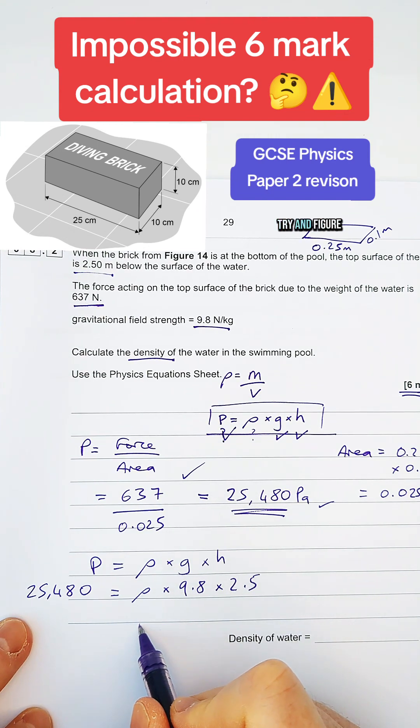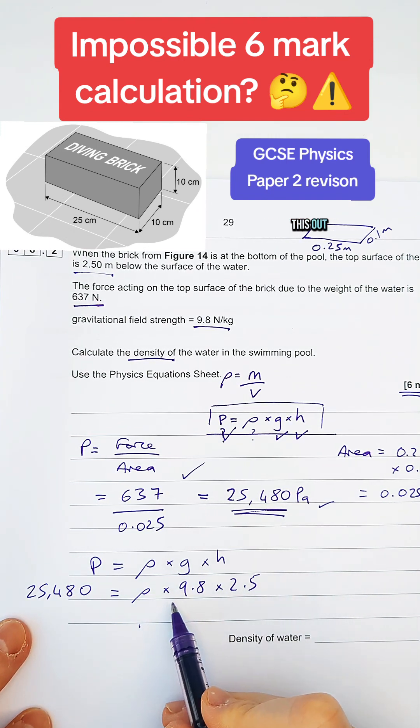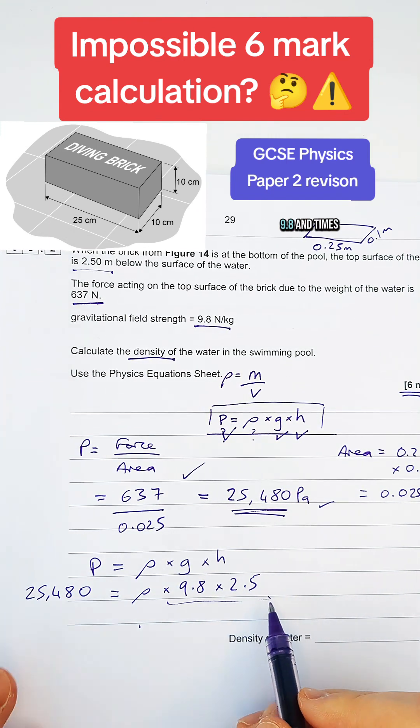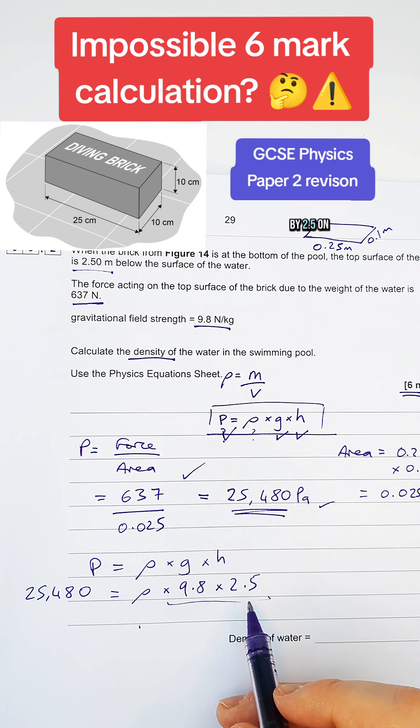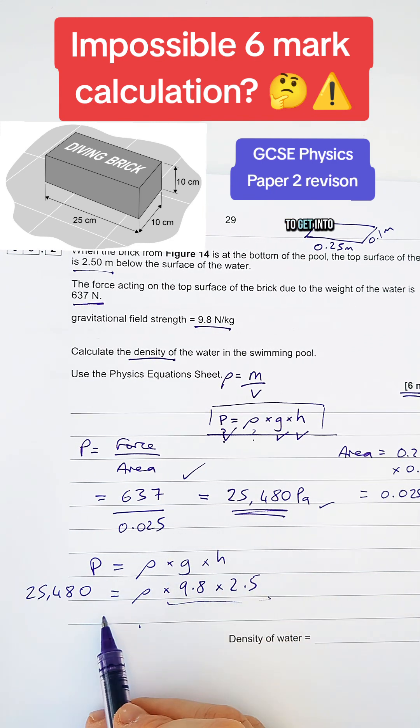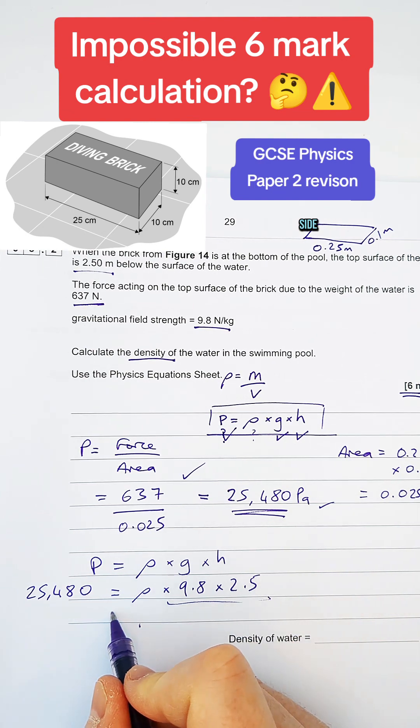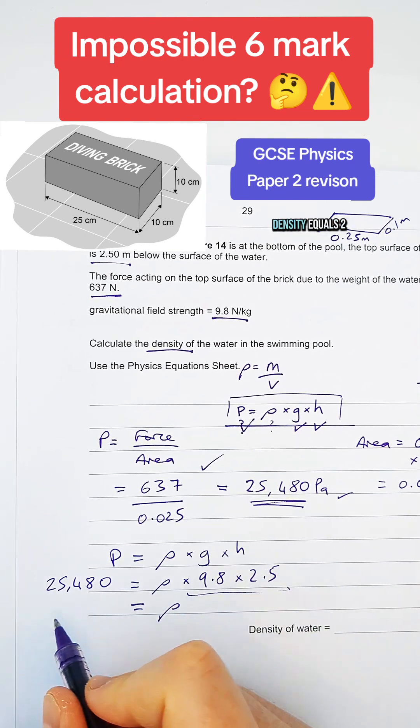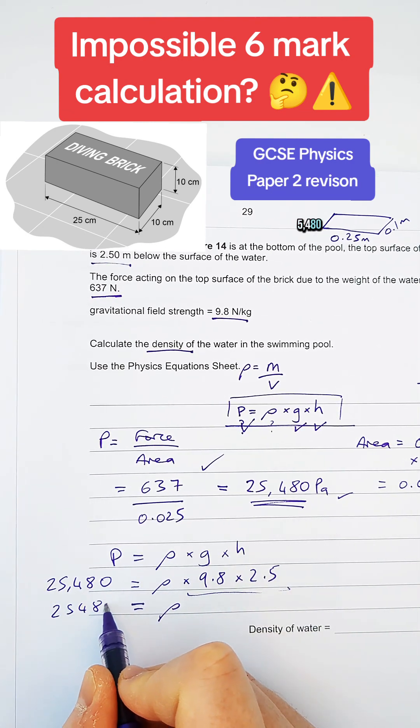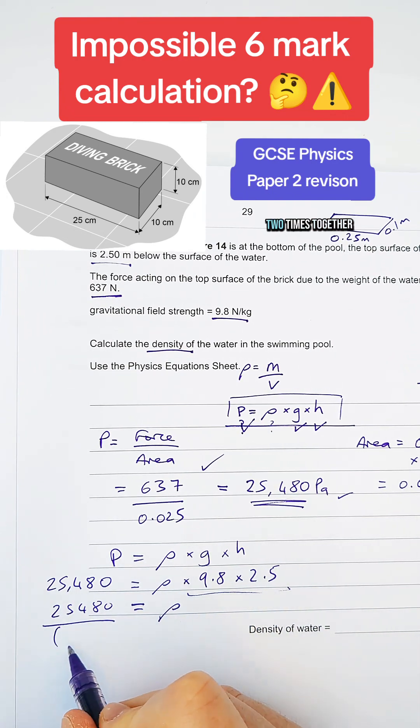And then we just simplify and try and figure out how am I actually going to find this out. So I've currently got times by 9.8 and times by 2.5 on the right-hand side, so I need them to get into the left-hand side. So we're going to end up doing something like the density equals 25,480 divided by those two times together.